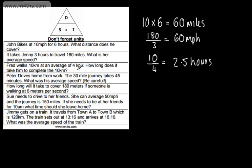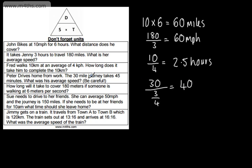Peter drives home from work. The 30-mile journey takes 45 minutes. What was his average speed? Generally speaking, we would give our answer in miles per hour. If we want speed, we're doing distance divided by time. The distance is 30, and students often write 45 here — but this is 45 minutes, which is three quarters of an hour. If I do 30 divided by three quarters, I get 40. We've got miles and hours, so this is 40 miles per hour. You could give it in minutes, but generally speaking we would give it in miles per hour.